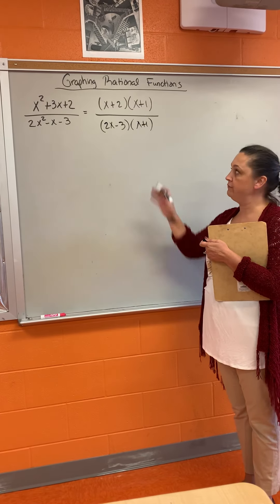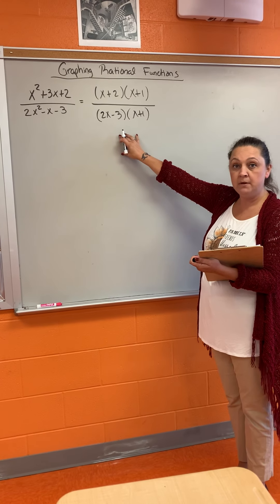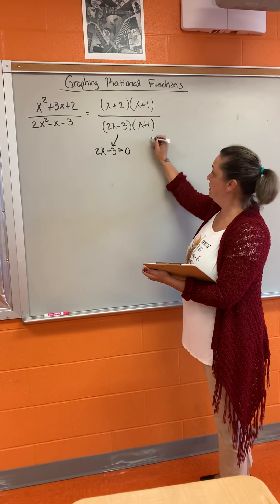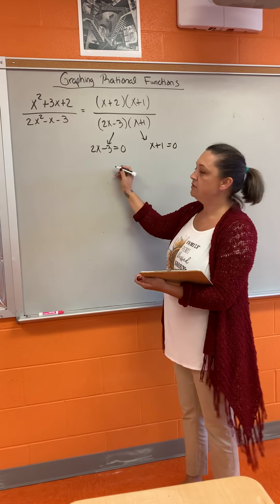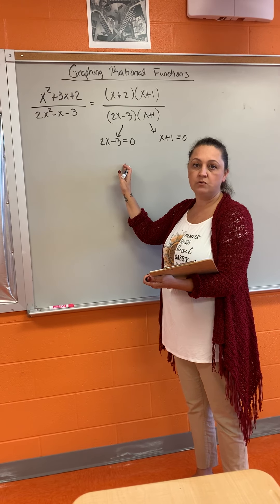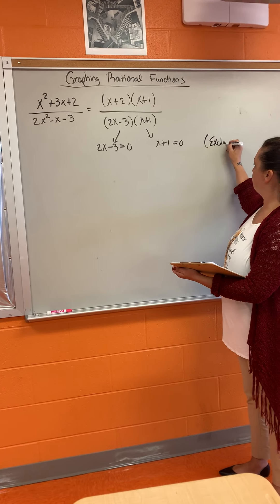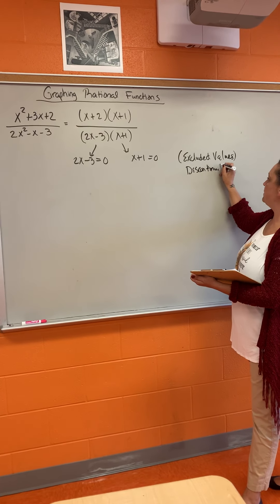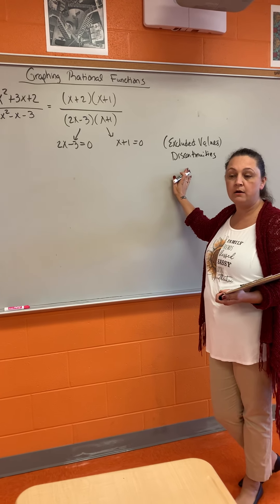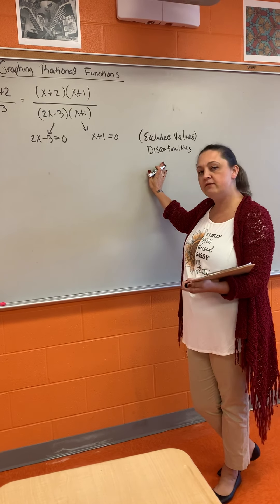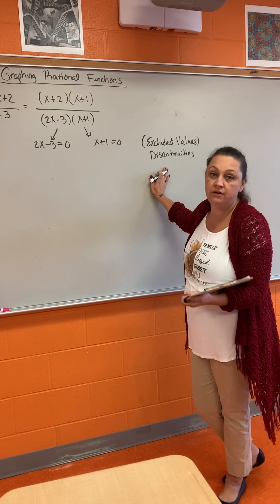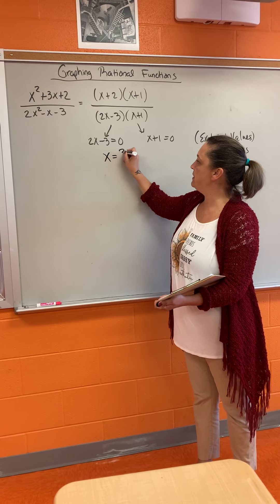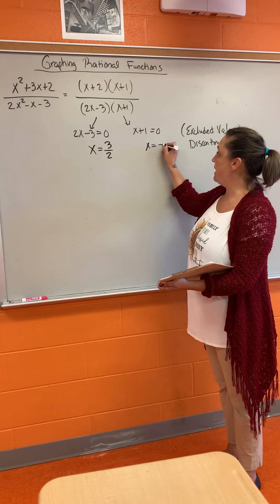For rational functions, the first thing after you get the factored form is to set the bottom of your fraction equal to 0. That means 2x − 3 = 0 or x + 1 = 0. These are called discontinuities, or excluded values. Discontinuities are locations on the graph where the function cannot go, because that's where an undefined value happens — where the bottom of a fraction equals 0. The first discontinuity is at x = 3/2, and the second is at x = −1.